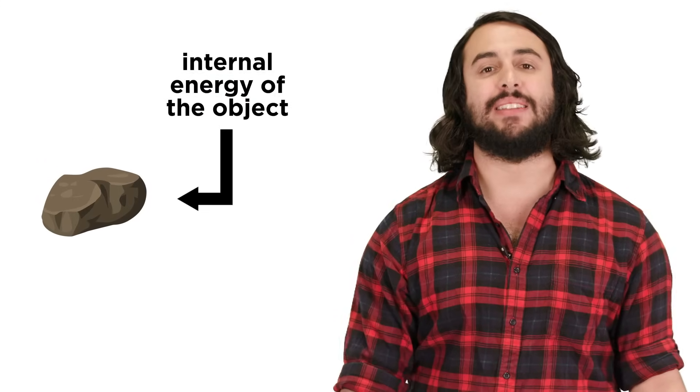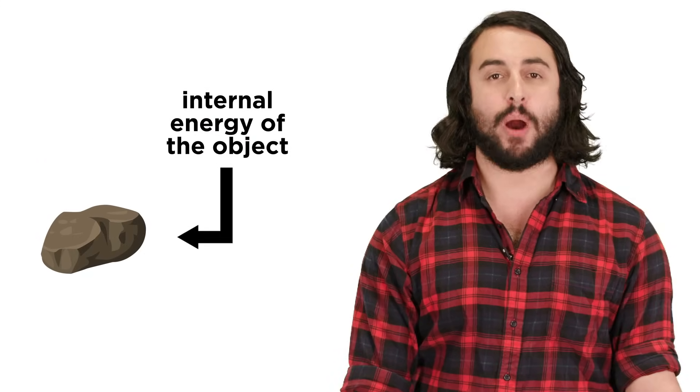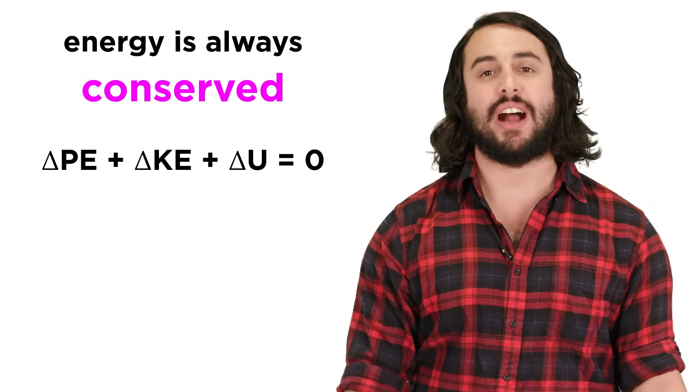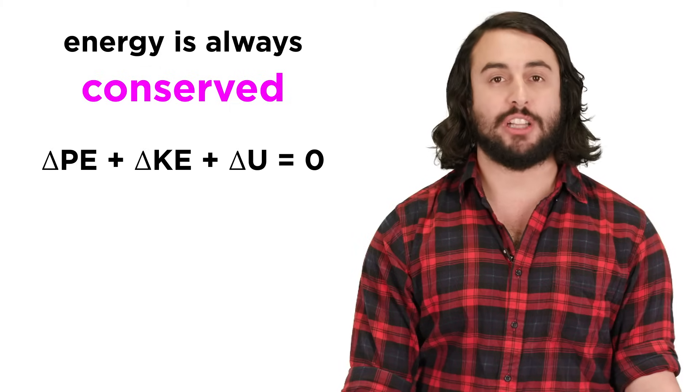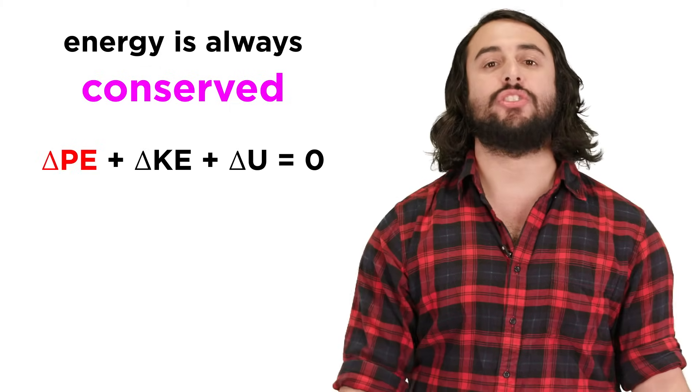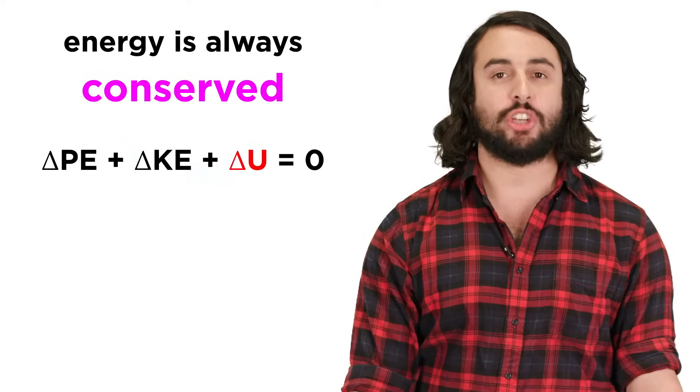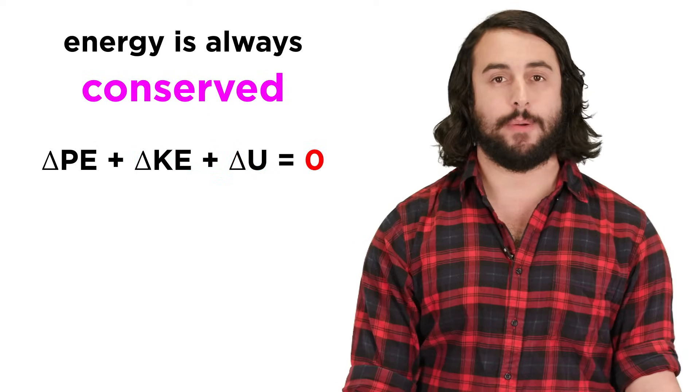We already know about the kinetic energy and potential energy of an object moving through a gravitational field, so let's add the internal energy of the particles in the object to this list and restate conservation of energy with the following equation. Change in potential energy plus change in kinetic energy plus change in internal energy will always be zero.